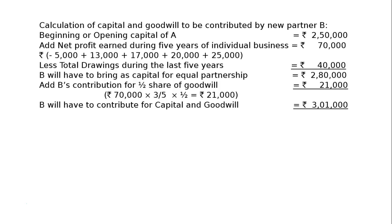Hence, B will have to contribute for capital and goodwill: for capital Rs. 2,80,000, and for goodwill Rs. 21,000, to be an equal partner with A, that is a ratio of 1 is to 1.